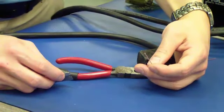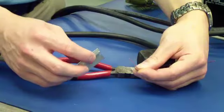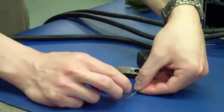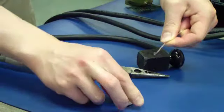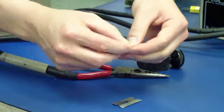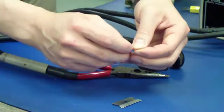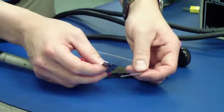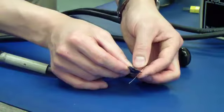The first step to making a thermocouple is to take the wire and split it in half. This is easily done with a razor blade. Now we can pull the two conductors apart, and the next thing we want to do is strip the insulation off the conductors.